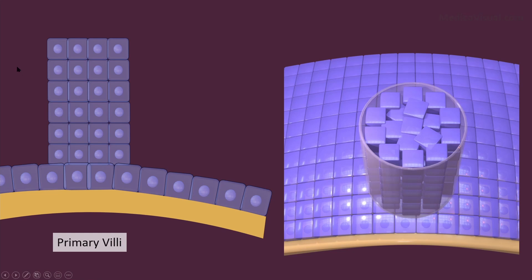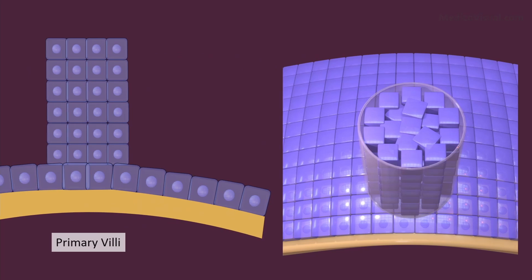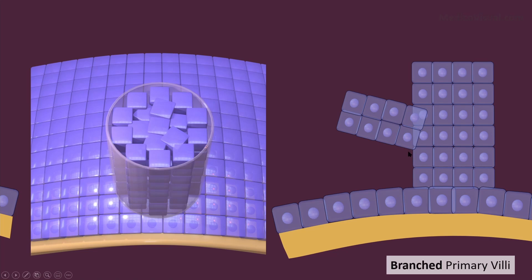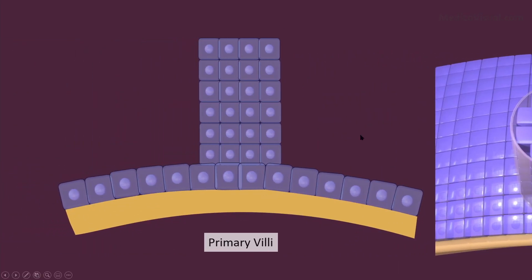This is a cut section — we have cut here and are looking at the top in this 3D diagram. You can see that this primary villus is a solid cord of cytotrophoblastic cells. Early on, most of the primary villi are unbranched, but later on some of them become branched. These branched primary villi are similar in structure to the unbranched ones; the only difference is the branching pattern, and we call them branched primary villi.